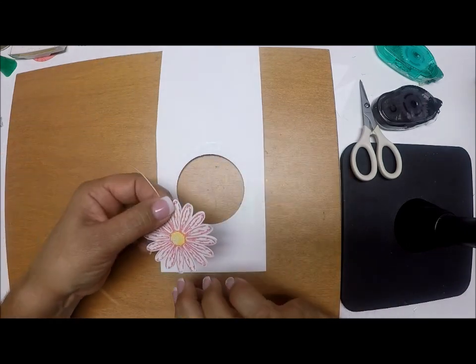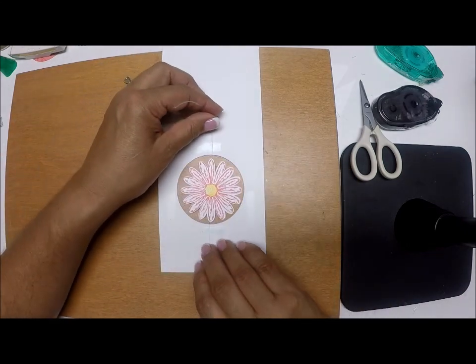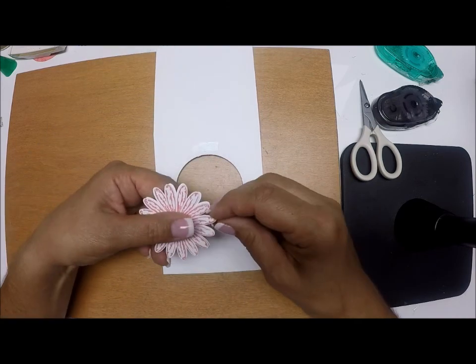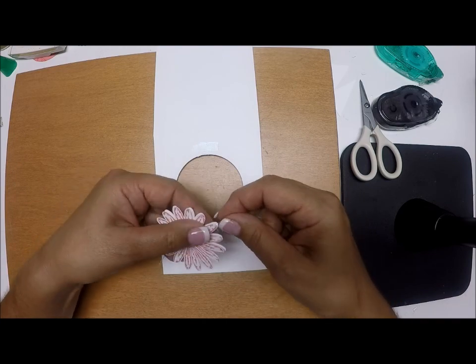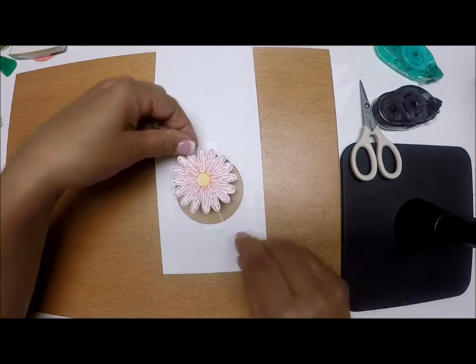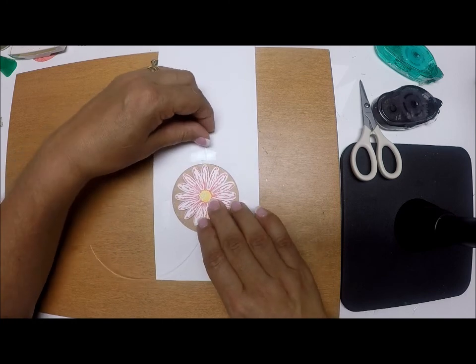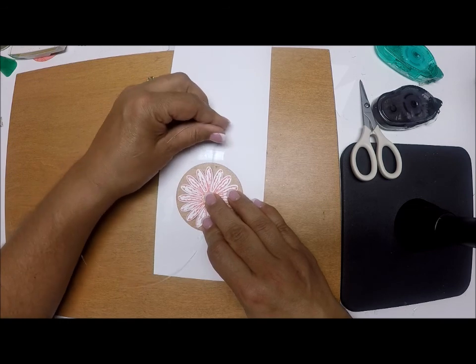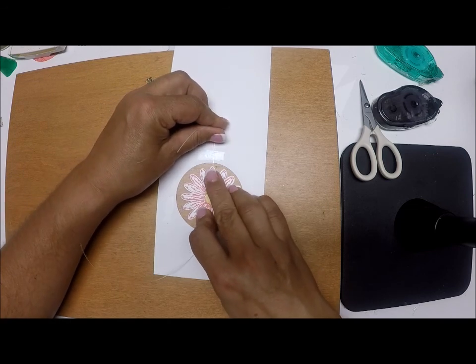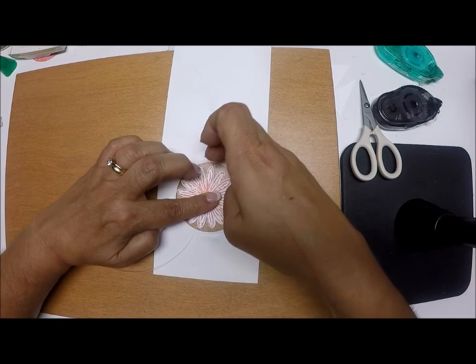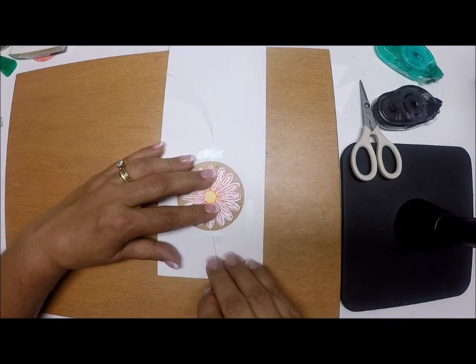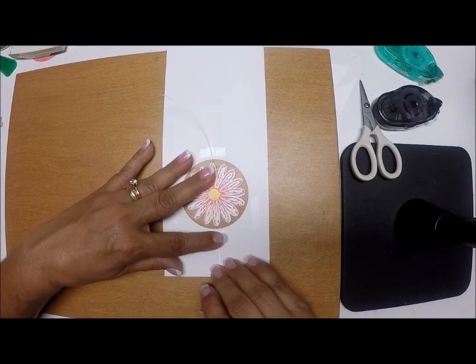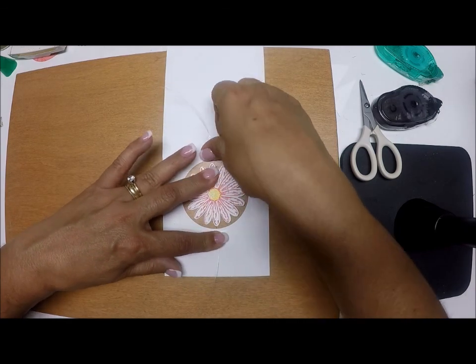And press it together so that the fishing line is sandwiched between the two daisies. Just give it a second to press on it, give it a second for it to set. Now this is the front of your card. You're going to position this where it belongs, where it looks good. Right there, this is where I like it. And I'm going to press my fishing line into my snail from the top, and then I'm going to press it into my snail on the bottom.